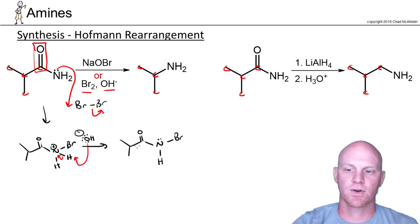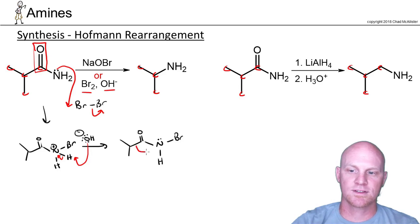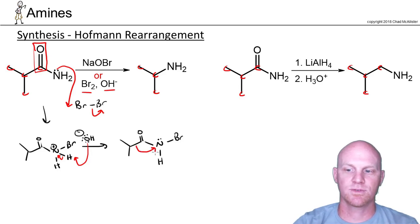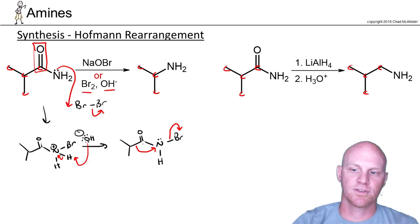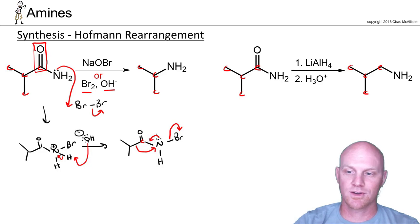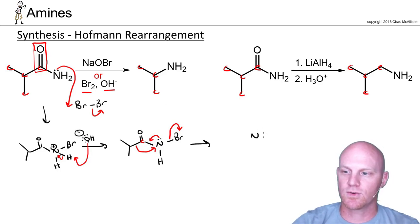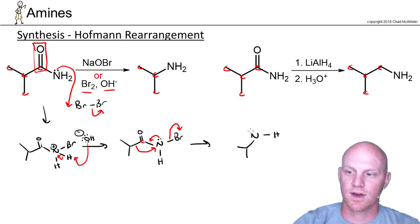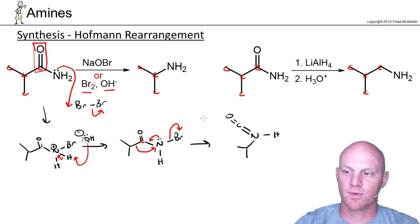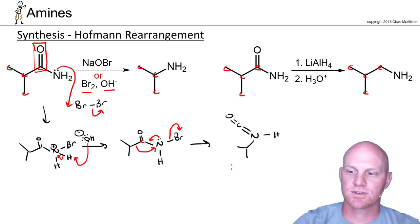Here's where the big rearrangement comes from. This bond right here is going to break and reattach to the nitrogen, kicking off the leaving group. But simultaneously, so that this carbon right here doesn't end up being a carbocation, we're going to dump these electrons in. You could show it as resonance technically, but I'm going to show it in one step with one structure. Now your nitrogen is still bonded to a hydrogen and to the carbon chain, and it's also still bonded to the carbon that's double bonded to oxygen — but now instead of a single bond, it is a double bond. This intermediate is called an isocyanate.